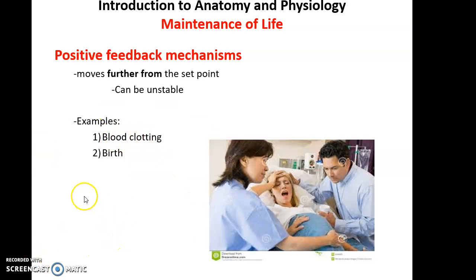Two examples of positive feedback include childbirth, where contractions become faster and stronger until the infant is expelled from the body, and blood clotting, where clotting causes more and more of the blood to clot, growing bigger and bigger until it finally stops the blood loss. Those are two forms of positive feedback. That is it for this part of the chapter one lectures.